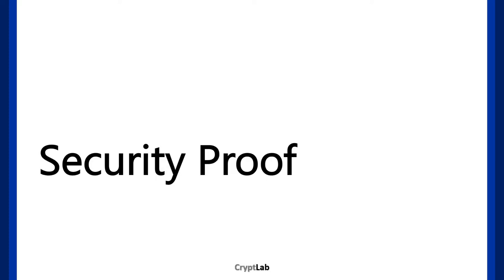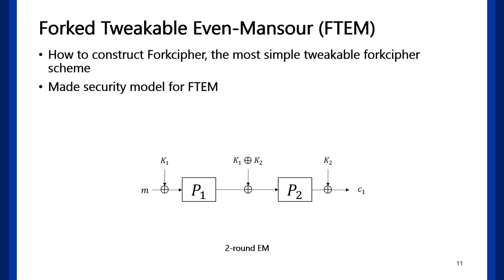Next, our security proof section. We first want to show you how we construct FTEM structure. Below is two-round even-Mansour construction. In 2015, the security for two-round tweakable even-Mansour construction was proved. They substituted keys in even-Mansour to tweak key. We don't make detail about tweak key today.